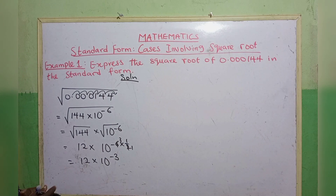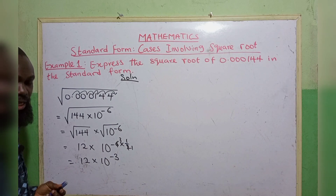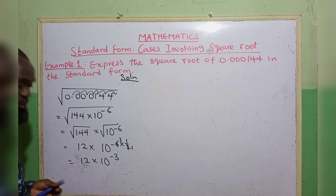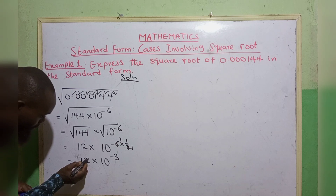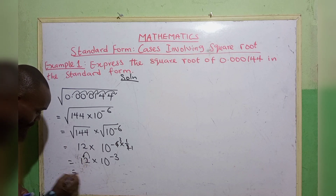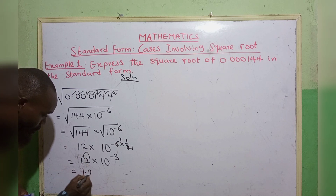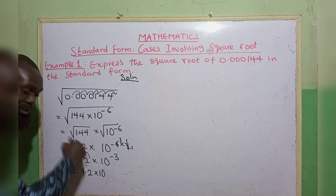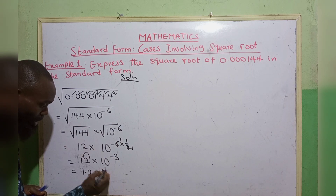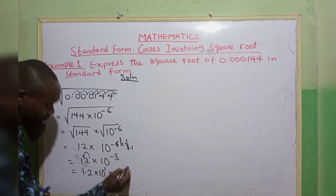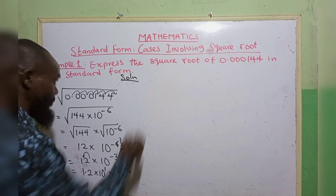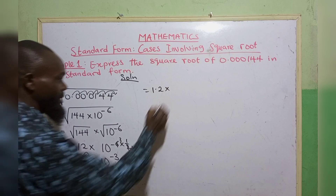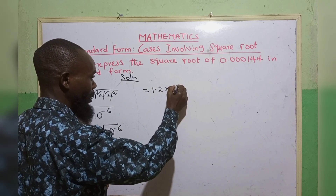We have to express this in standard form by putting a decimal point after the first non-zero digit. So we have 1.2. Since we are moving forward once, it is positive, giving us 1.2 times 10 raised to the power of 1, multiplied by 10 raised to the power of minus 3.